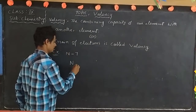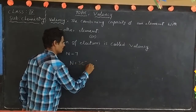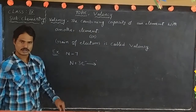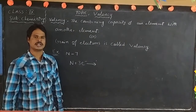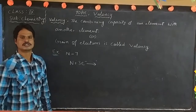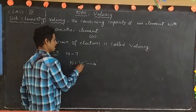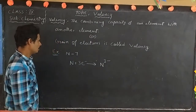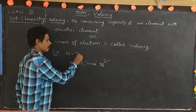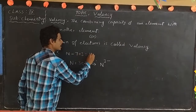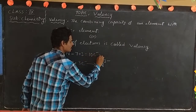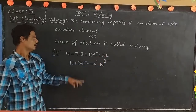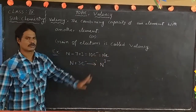Nitrogen gains 3 electrons. When an atom gains electrons it gets a negative charge — one electron gained gives one negative charge, three electrons give three negative charges. So nitrogen gains 3 electrons to become N³⁻, giving it 7 + 3 = 10 electrons, equal to neon's electronic configuration.